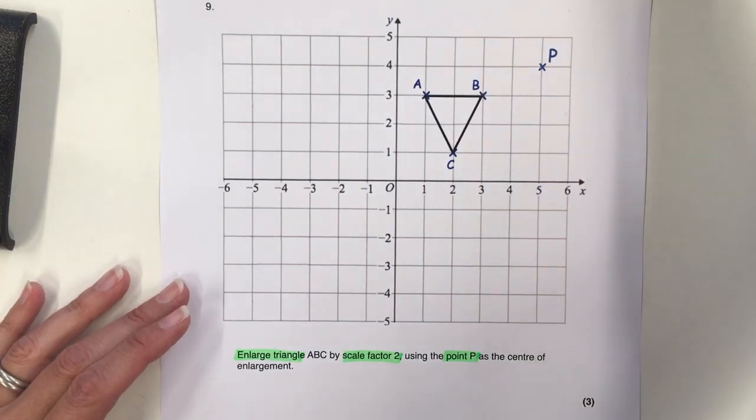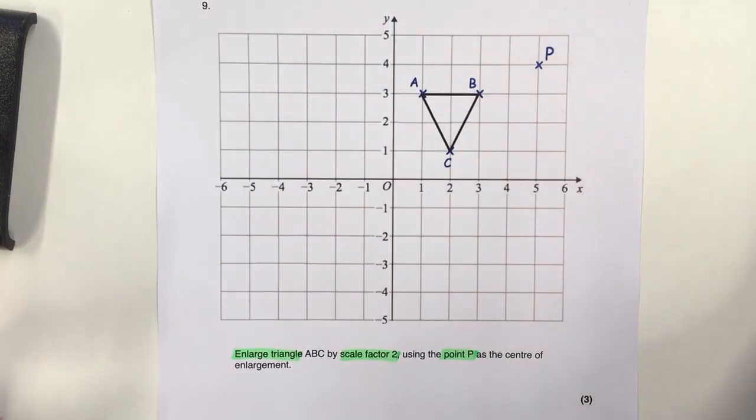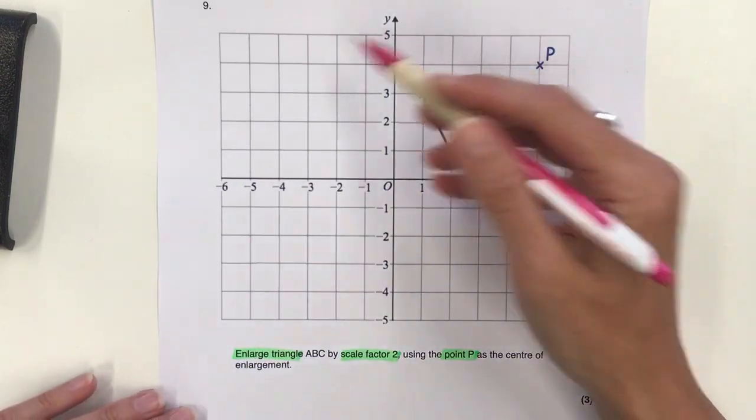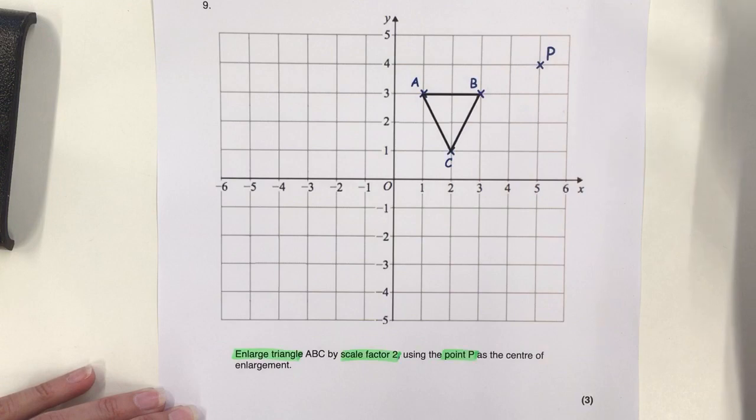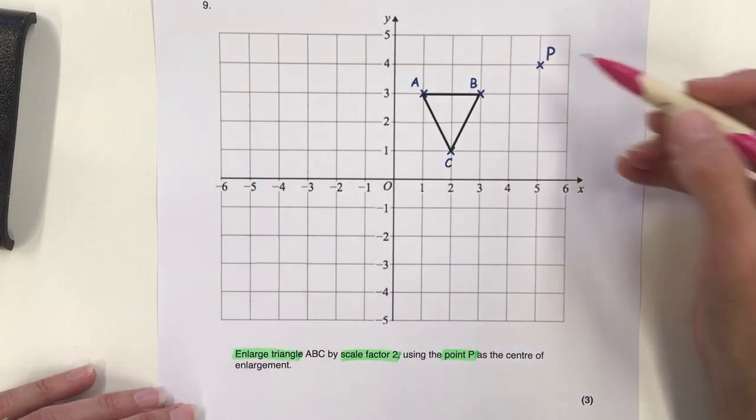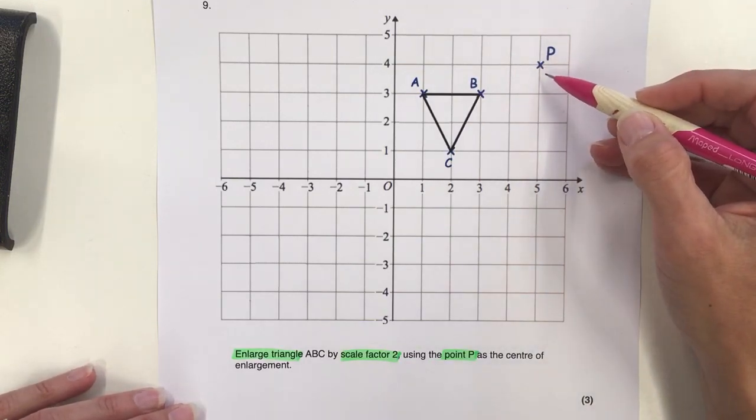We have to do it from point P because if we just enlarge the shape and draw it anywhere on the diagram, we get a mark but we don't get full marks. So we need to use this point if it's referenced in the question.